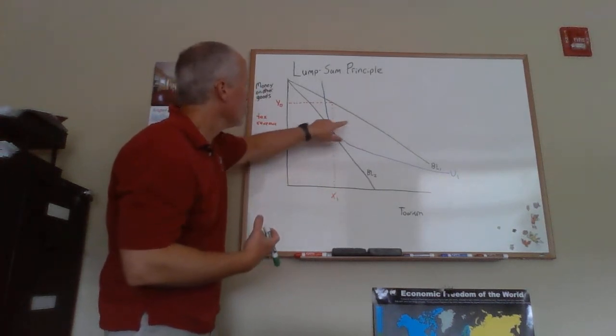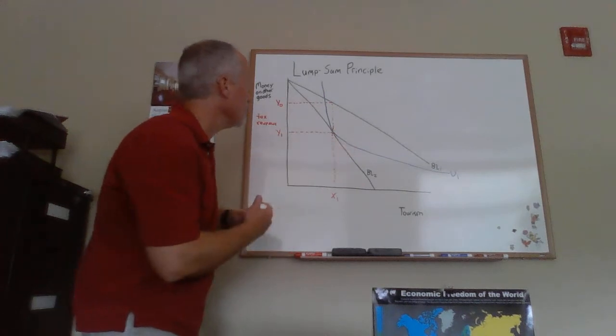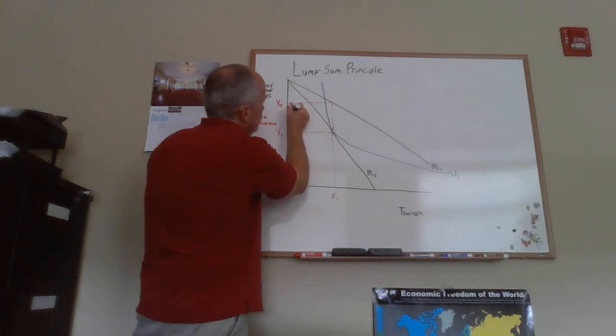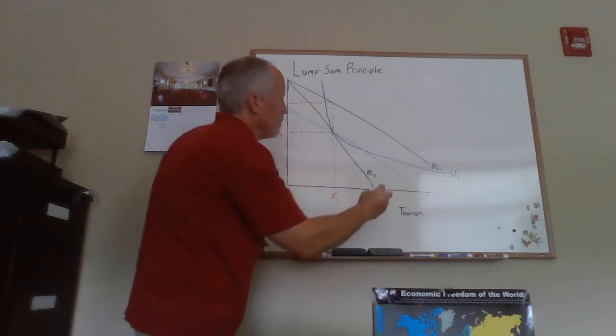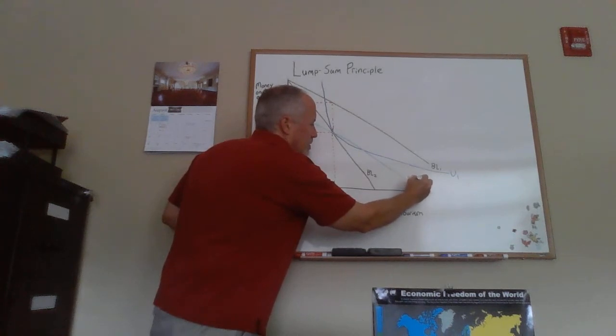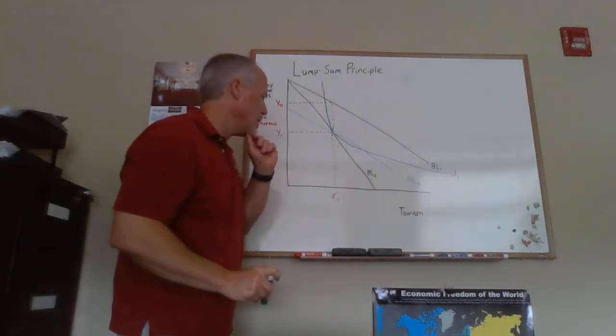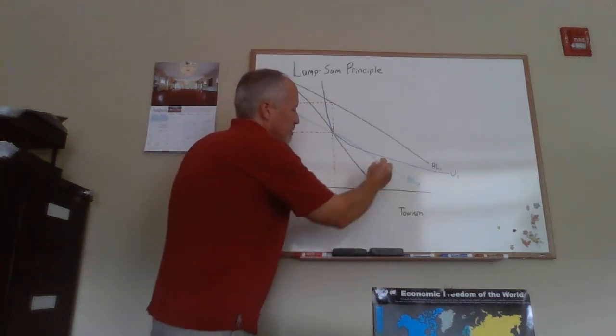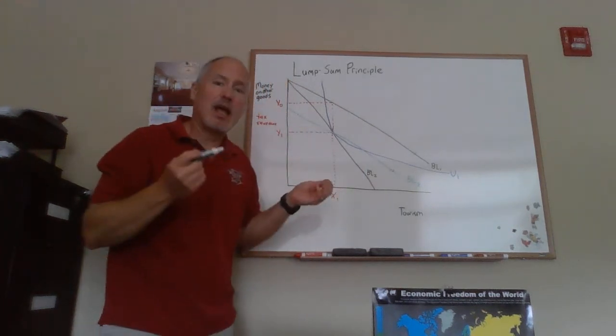We want to draw a budget line that's parallel to BL1 and goes through this tangency point here with U1. So I'll try to do that here as carefully as I can, maybe exaggerating a little bit because I want to be able to make sure that we can show the point here. Here's BL3. I've drawn in this budget line. It's parallel to BL1, so I'll put our little slash marks through it here, and it goes through this point here so it's collecting the same amount of revenue as our commodity tax.